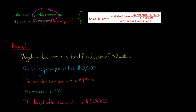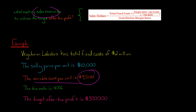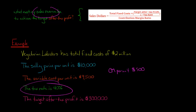Let's say we have a company called Vegetarian Lobsters. Not everybody eats meat, so we need vegetarian alternatives for everything. This company has total fixed costs of $2 million, a selling price per unit of $10,000 — wow, that's an expensive lobster — and a variable cost per unit of $9,500. So the contribution margin per unit is $500. The company's tax rate is 40%, and the after-tax profit they want to achieve is $300,000.